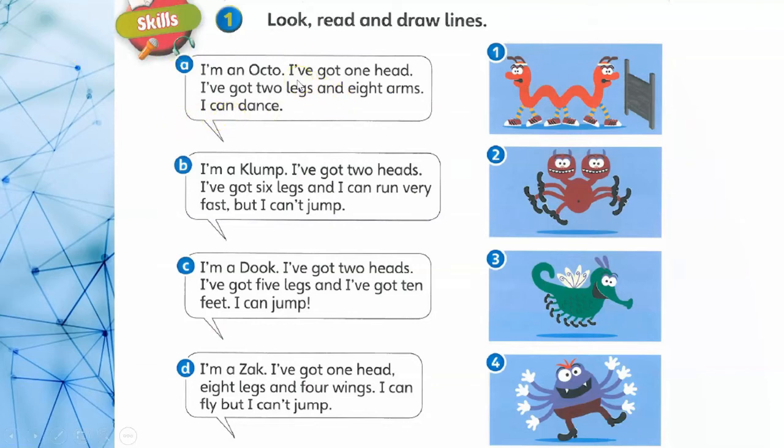I'm an Octo. I've got one head, I've got two legs and eight arms. I can dance. Eight arms. Okay, so the answer is this one.